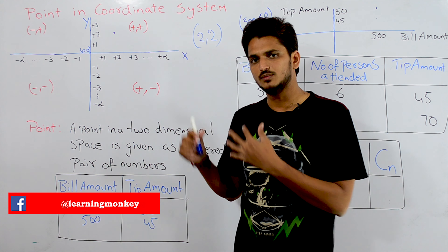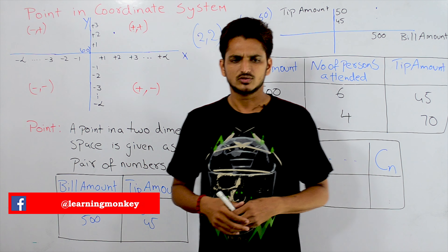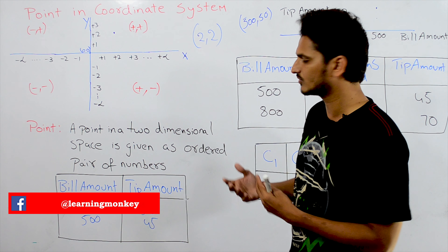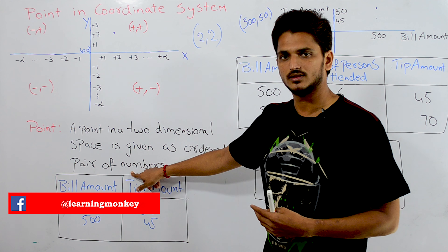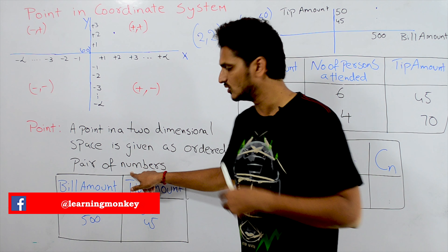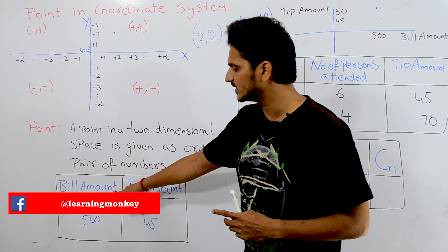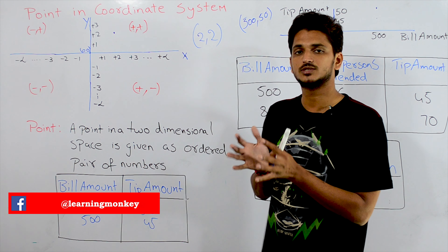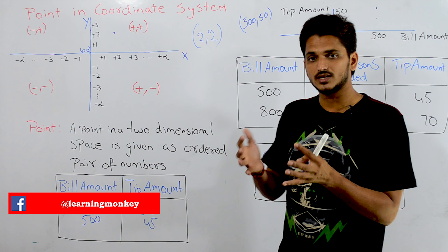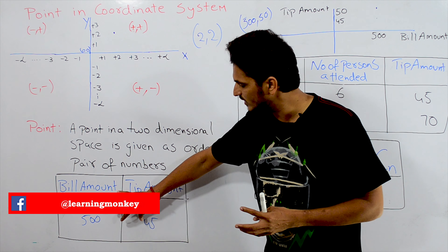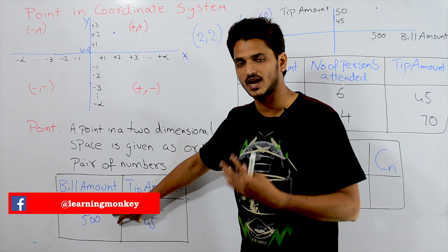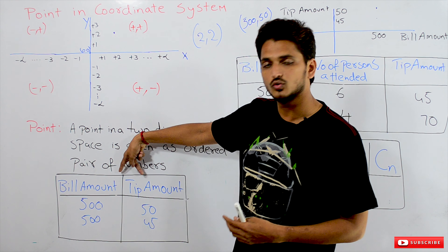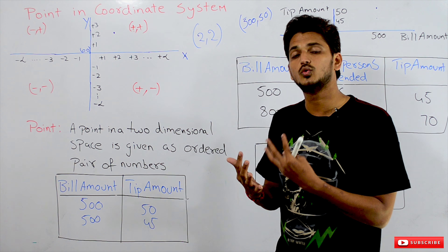Let's see how this helps in machine learning. We are following a tip amount prediction example from our last two classes. The data we considered has two columns: bill amount and tip amount. This data can be represented in a two-dimensional coordinate space. We use two dimensions because we have two columns.